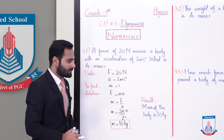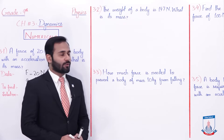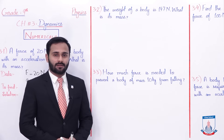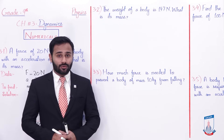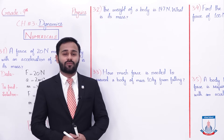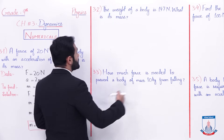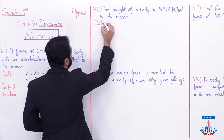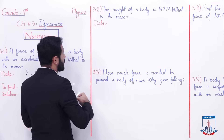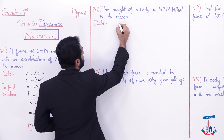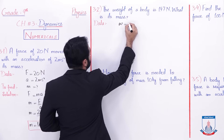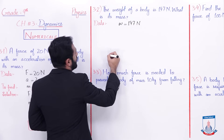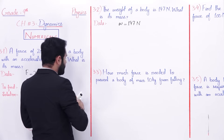Now move to the next numerical. Numerical 3.2 — the weight of a body is 147 newton, what is its mass? Ek body ka weight hai 147 newton, to uska mass kya hoga? First of all data note down kar lete hain. Weight given hai W = 147 newton, aur aapne find out karna hai mass.